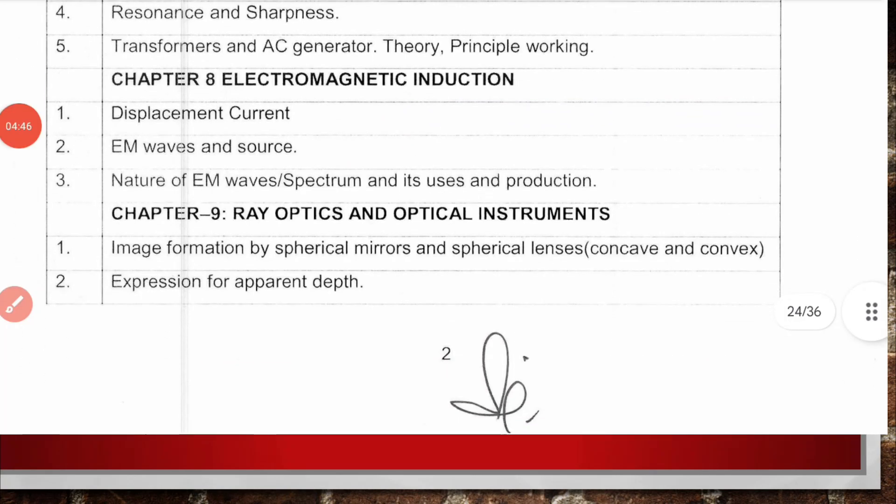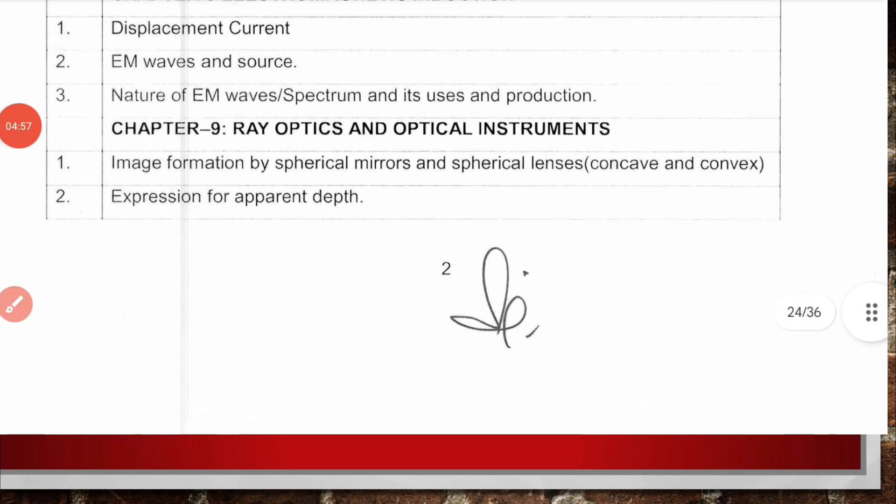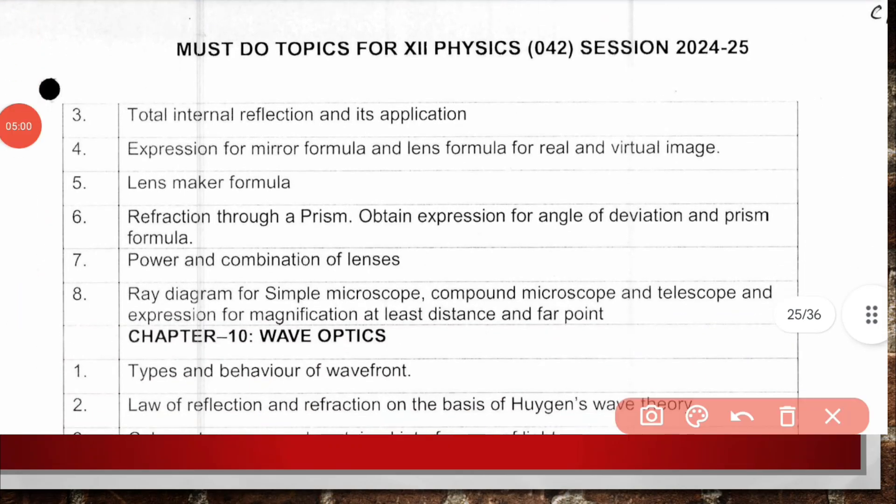Chapter 9, Ray Optics and Optical Instruments: image formation by spherical mirror and spherical lens, expression for apparent depth, total internal reflection and its applications, expression for mirror formula and lens formula for real and virtual images, lens maker formula, refraction through prism with derivation of angle of deviation, power and combination of lenses, and ray diagrams for simple microscope, compound microscope and telescope.